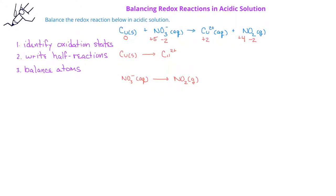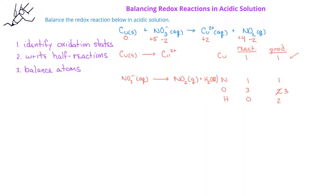Now we can balance the atoms in each half reaction. For the oxidation half reaction, we have one copper on each side, so it's balanced. For the reduction half reaction, we see that there's one nitrogen on each side, but there are three oxygens on the reactant side and just two on the product side. We balance the oxygens by adding one water on the product side. Once we've added water, we've added hydrogens, so we balance those by adding two hydrogen ions to the reactant side. Now we have two hydrogens, one nitrogen, and three oxygens on each side.